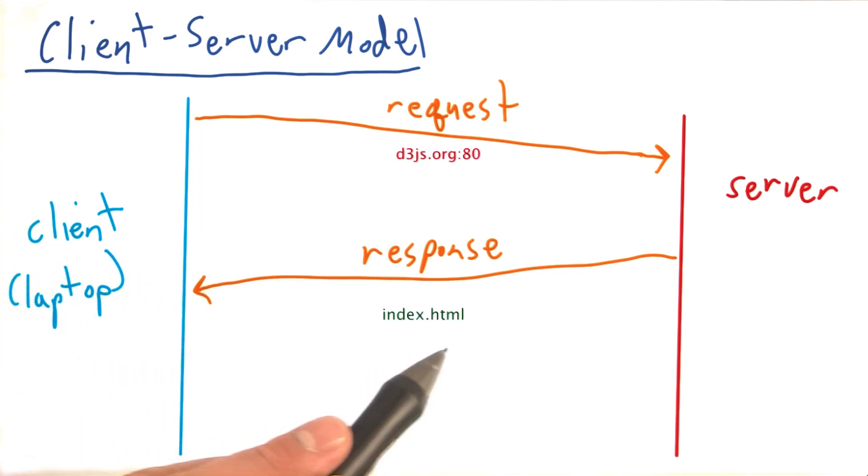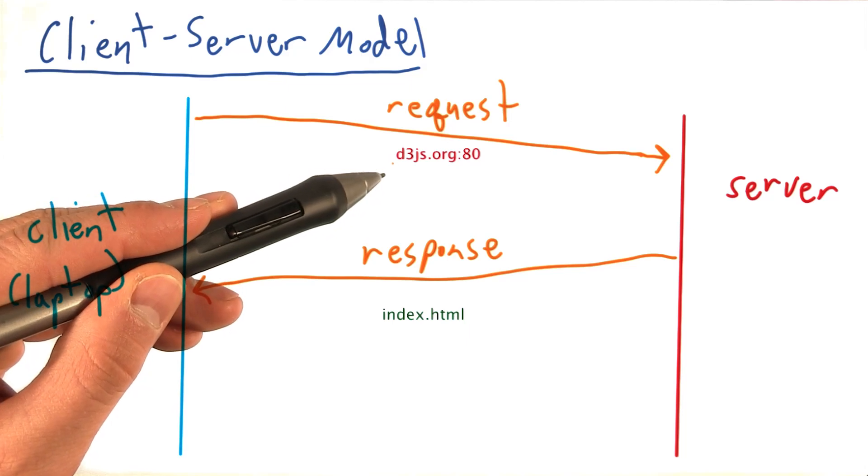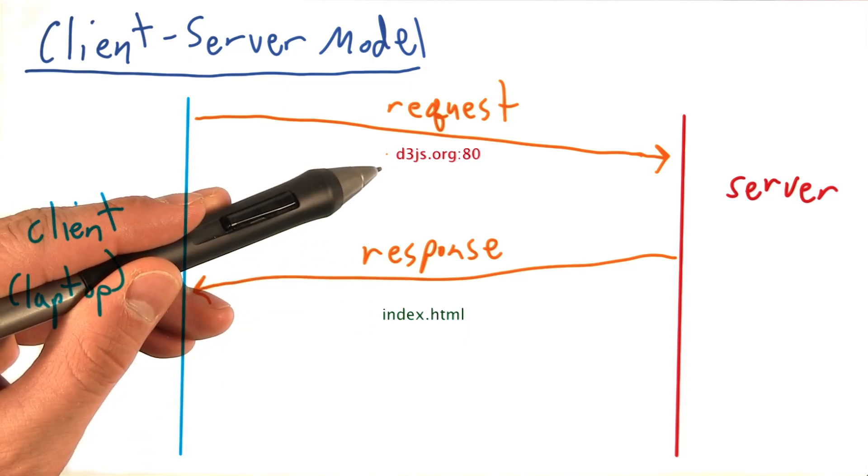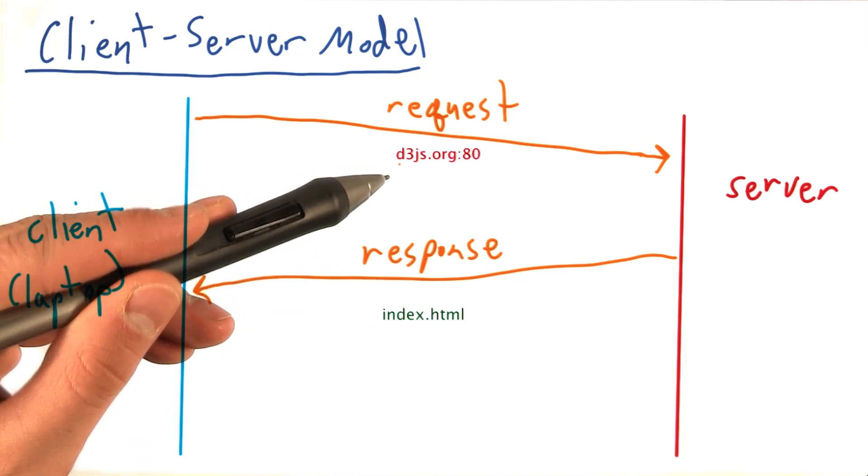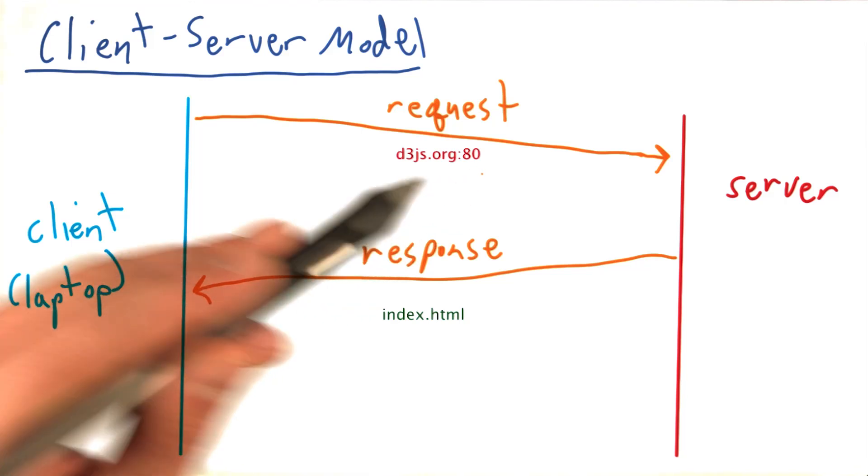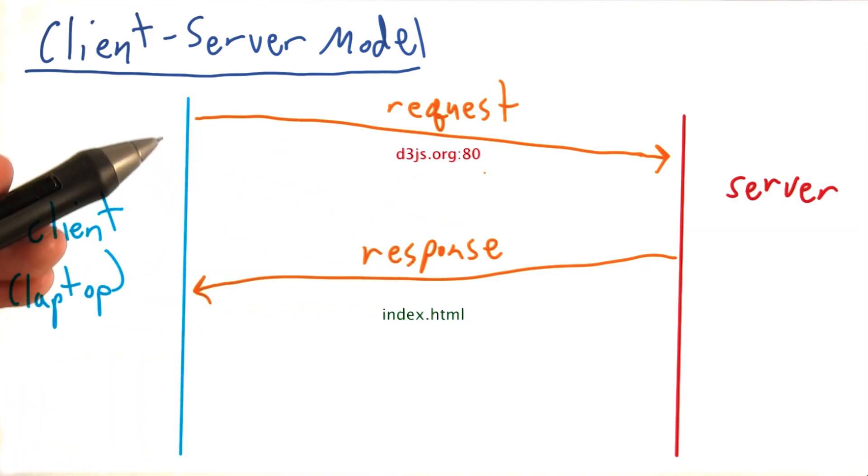In the case of D3 code, let's say that we request the index page from D3js.org on port 80, which is the default for all web communication, or at least HTTP.